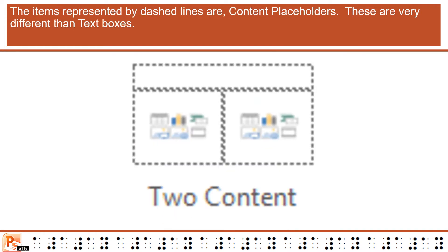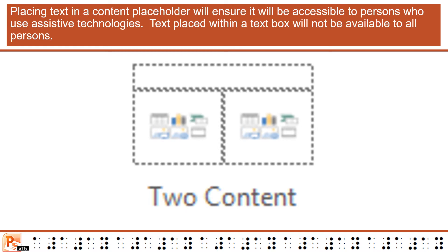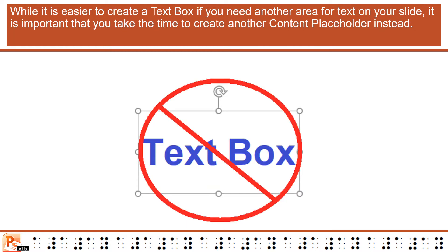The items represented by dashed lines are Content Placeholders. These are very different than text boxes. Placing text in a content placeholder will ensure it will be accessible to persons who use assistive technologies. Text placed within a text box will not be available to all persons. While it is easier to create a text box, it is important that you take the time to create another content placeholder instead.